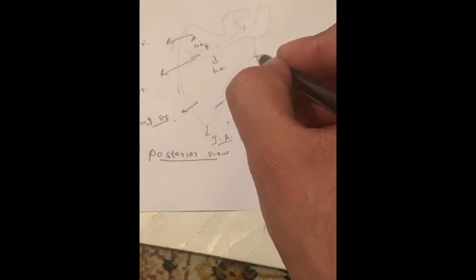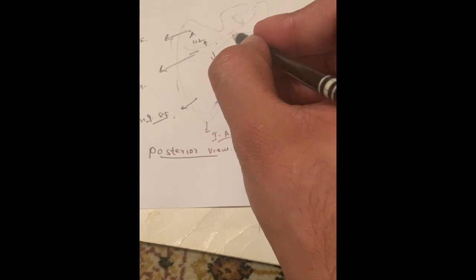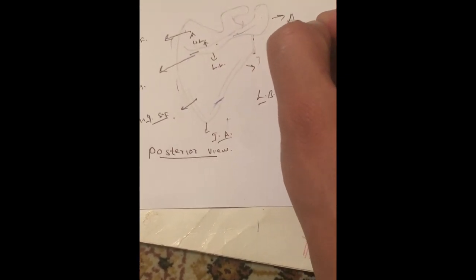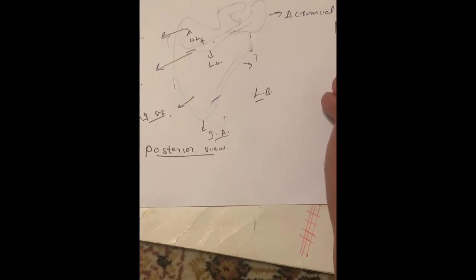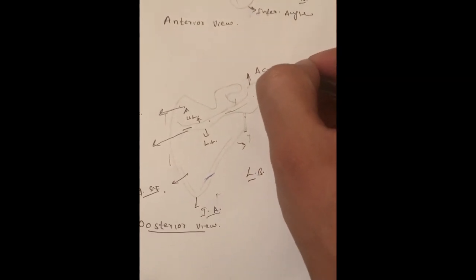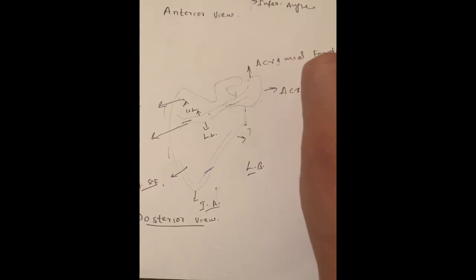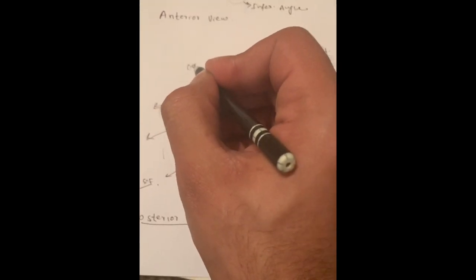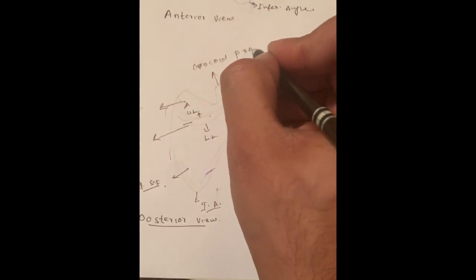Completing the sketch, we can also identify the inferior angle, the lateral border, the medial border, the infraglenoid tubercle, the glenoid cavity, and the acromial process with its acromial facet. The coracoid process is also present and is involved in ligament and muscle attachments. This concludes the general features of the scapula.